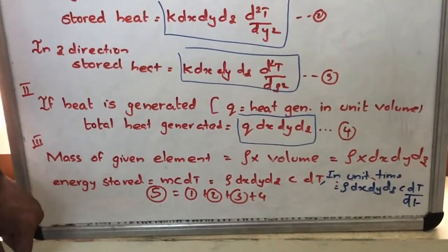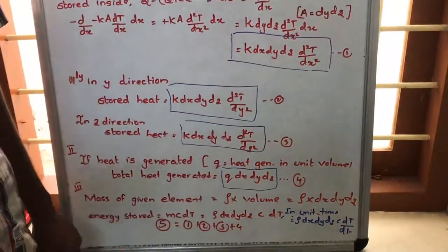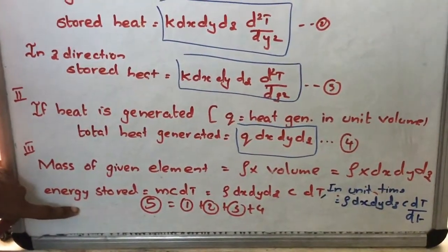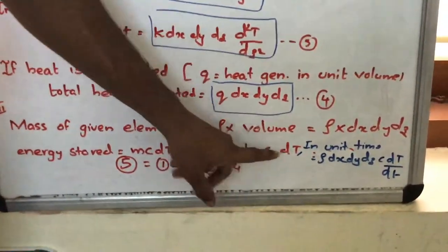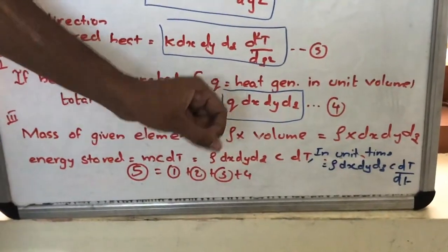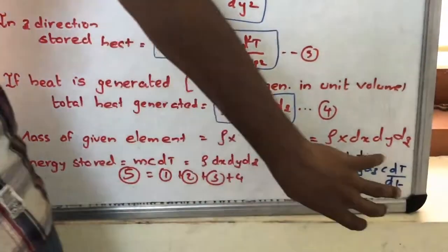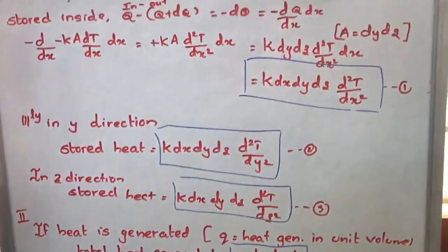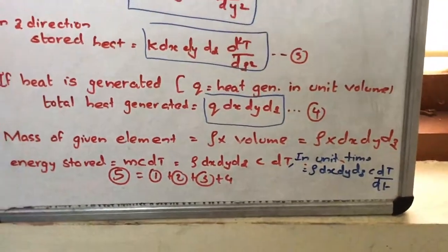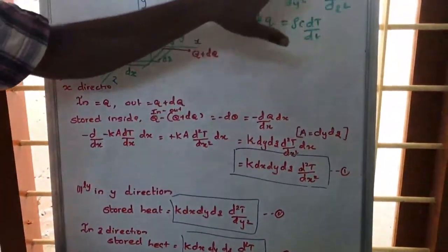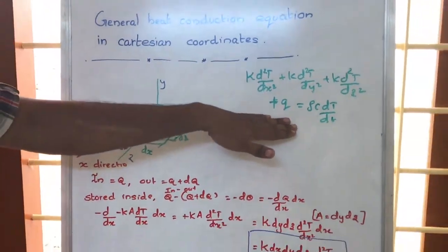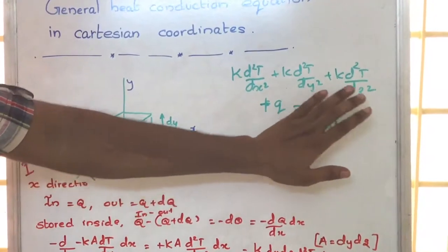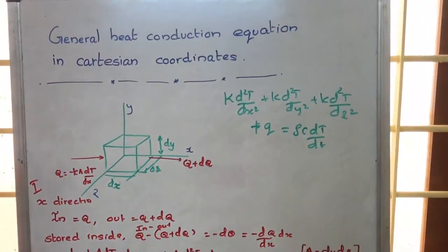The Fourier equation gives energy transfer in one second, so all terms refer to energy transfer per second. We must convert the stored energy to per unit time: mc·dT/dt becomes rho·dx·dy·dz·c·dT/dt. Equating this to the sum of the four equations and cancelling dx·dy·dz from every term, we obtain the general heat conduction equation. If there is no heat generation, we cancel the Q term. If it is steady state, we cancel the time derivative term. This is our general heat conduction equation.